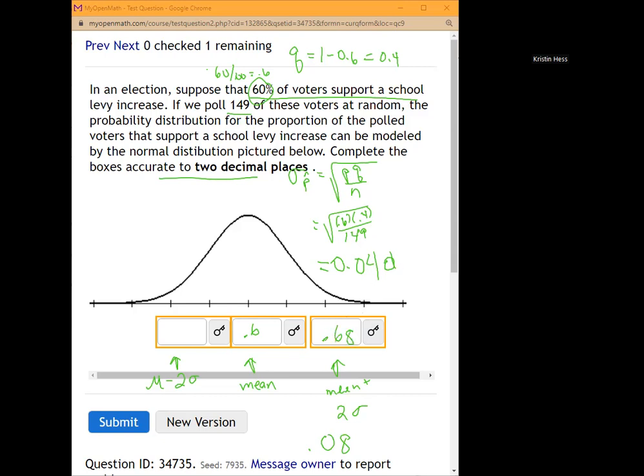And now we'll take 0.6 and subtract 0.08 to get the left side.